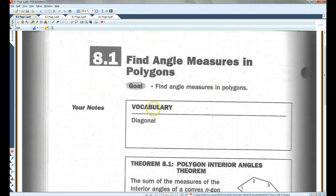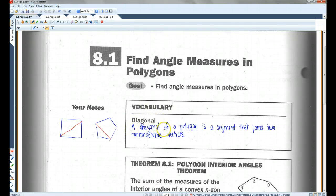I think most of you guys already know what a diagonal is. A diagonal of a polygon is a segment that joins two non-consecutive vertices. Remember, consecutive means they're right next to each other. Non-consecutive means the vertices are not right next to each other. So, for example, in this quadrilateral, this would be a diagonal. In this pentagon, this would be a diagonal, because this vertex and this vertex are non-consecutive.